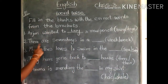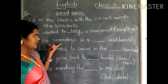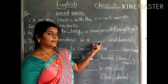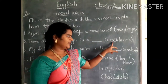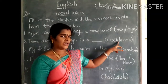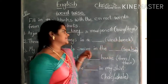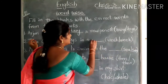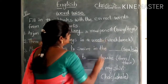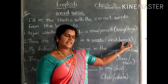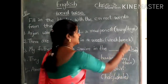Next one, the second sentence: There are 7 days in a week. What is the spelling of 'week'? W-E-A-K or W-E-E-K? Yes, W-E-E-K — week. This is the period of 7 days, that means week.